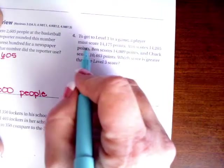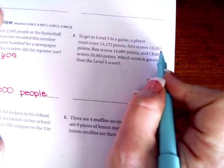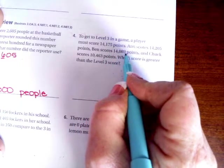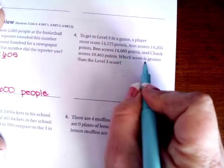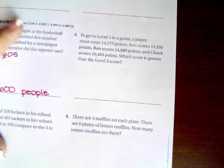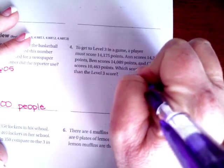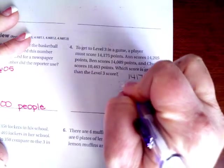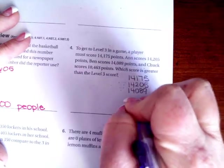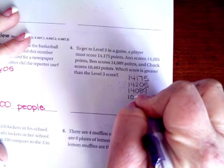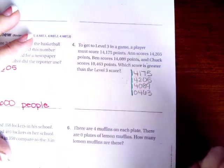To get to level three in a game, a player must score fourteen thousand one hundred and seventy five points. Ann scores fourteen thousand two hundred and five points. Ben scores fourteen thousand and eighty nine points, and Chuck scores ten thousand four hundred sixty three points. Which score is greater than the level three score? I'm going to go over here and write these numbers down. First I'm going to write down the number that you have to get to, then I'm going to write down the other numbers. Now we can see right away that the first number is the same in all of them.